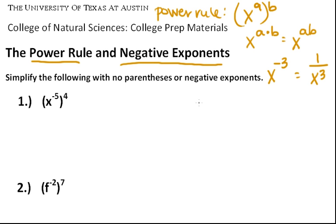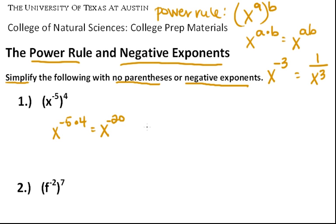Let's get some practice with these problems. In number one, we have x to the minus fifth, to the fourth. Let's use the power rule to get rid of those parentheses. So we have x to the minus five times four, which gives us x to the minus twenty. We need to simplify with no negative exponents, so we stick it under one: one over x to the twentieth is the answer.